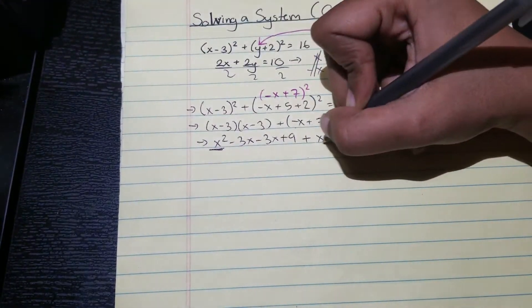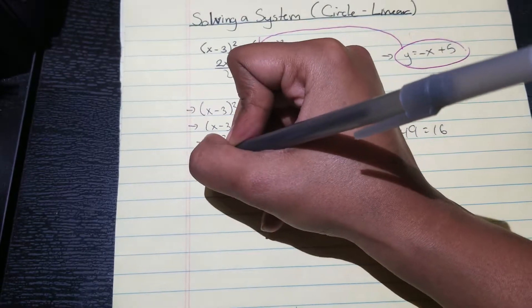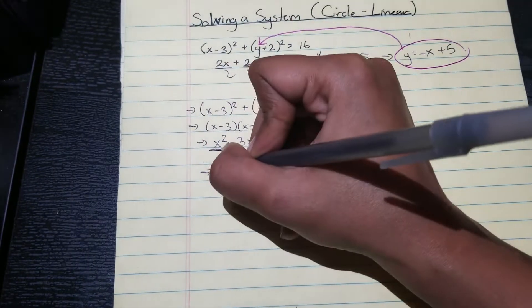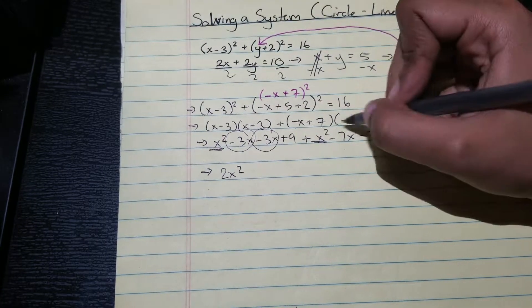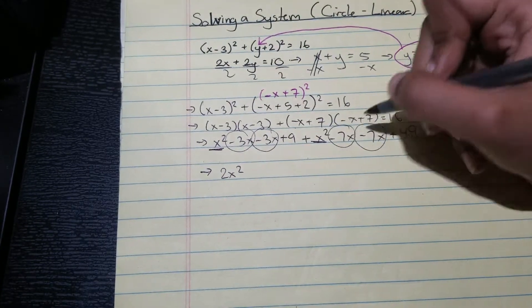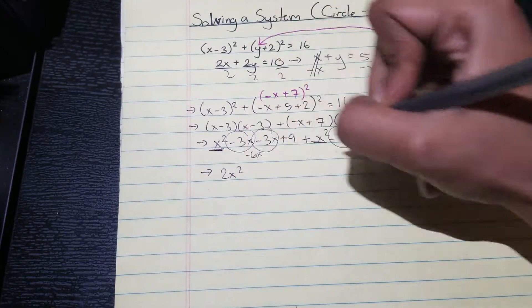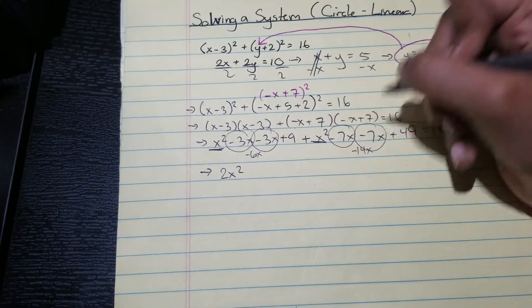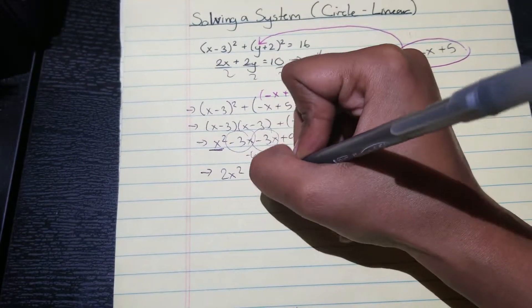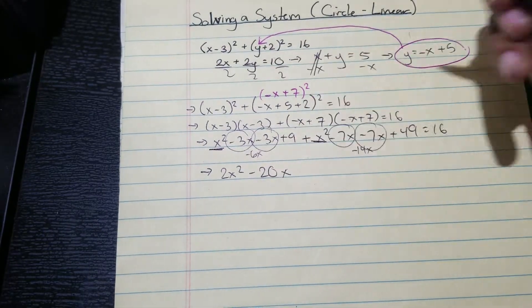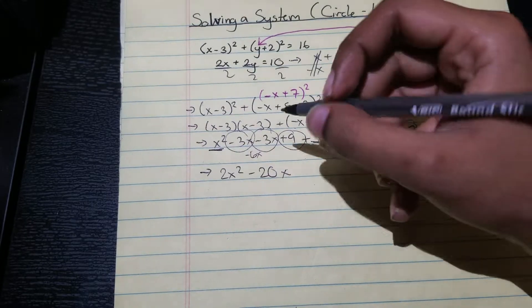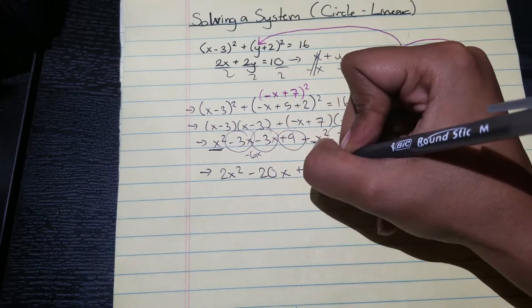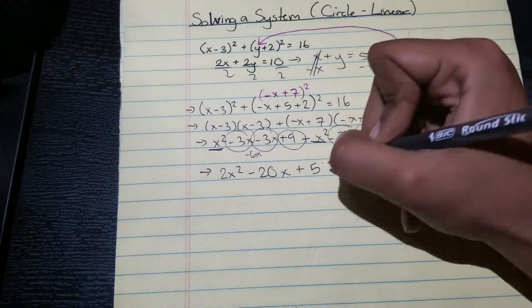And then we're going to start combining like terms. So the x squareds combine, that's going to give us two x squared. I have negative three x negative three x, that's negative six x. I have negative seven x negative seven x, that's negative 14 x, so it's going to be negative 20 x, yes, negative 20 x. And then I have nine plus 49, that's going to be plus 58.